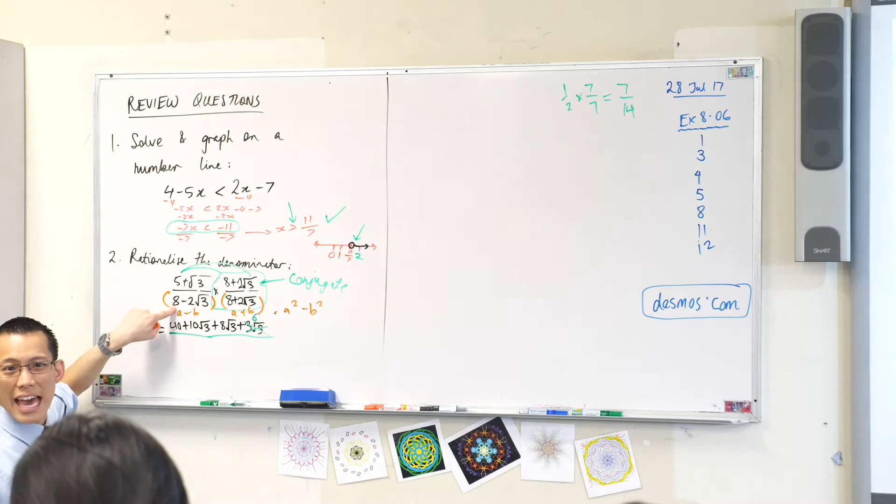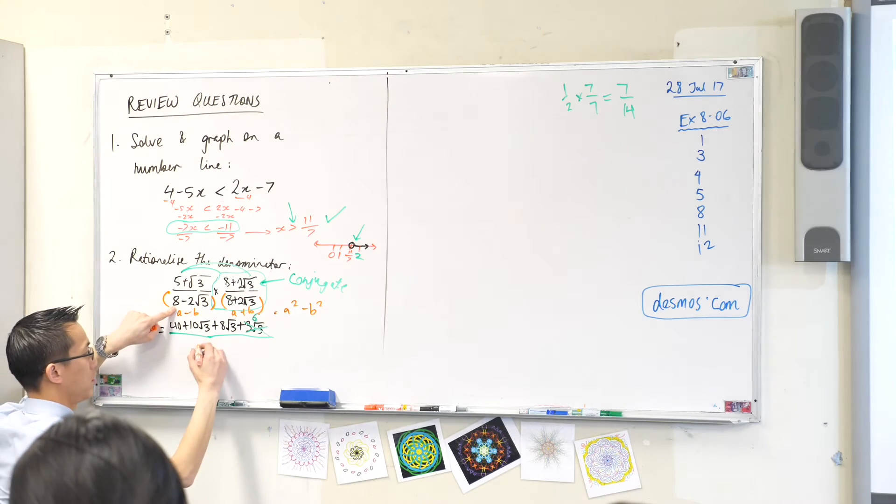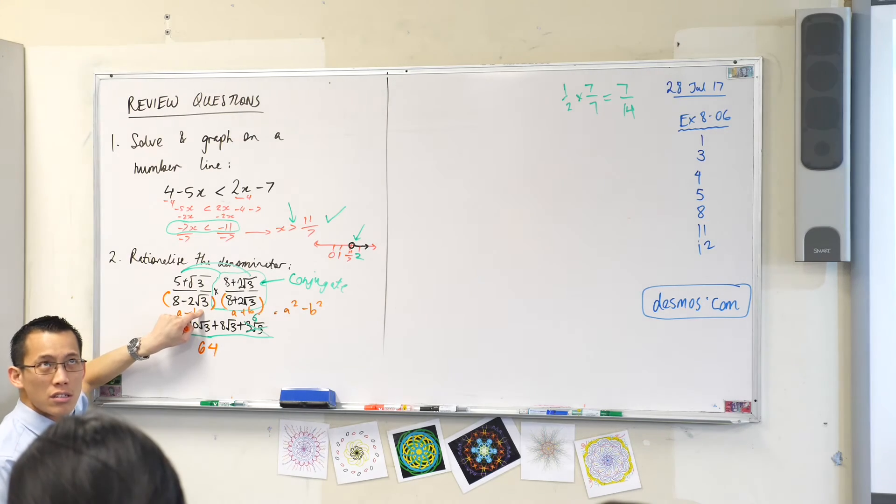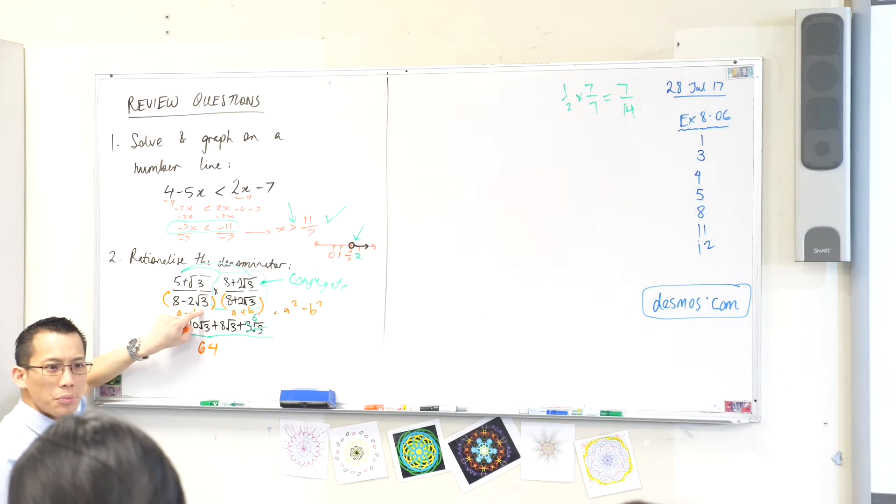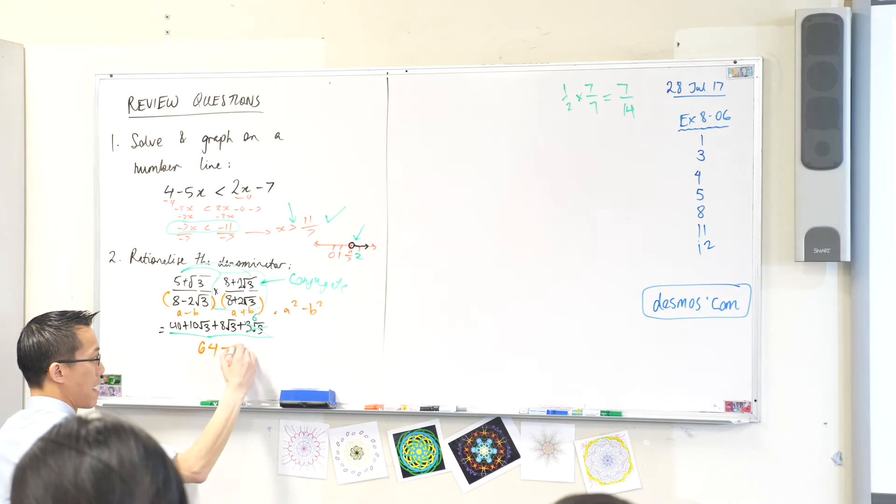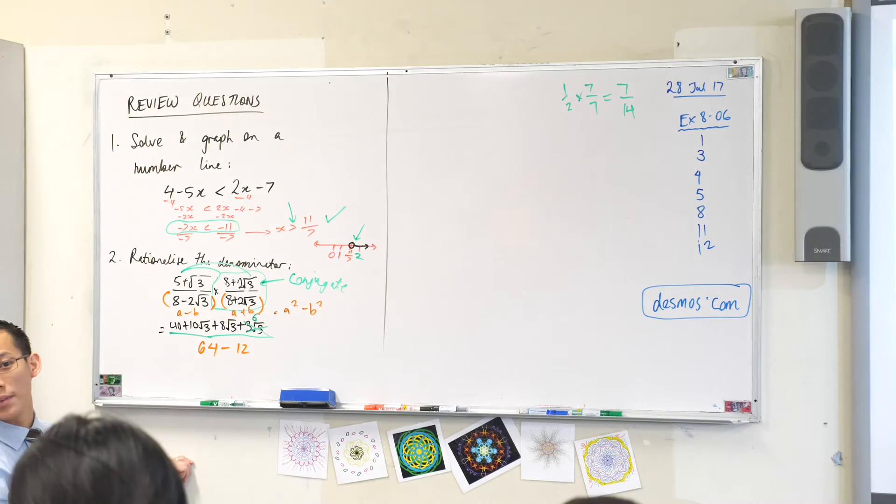So I just need to work out what a squared and b squared are. If that's a, what's a squared? Good. And if that's b, this is a bit trickier. 2 root 3. What's 2 root 3 times 2 root 3? The 2 times 2 gives you 4. The root 3 times root 3 gives you 3. So 4 times 3 is... I heard it. Minus 12. There we go.